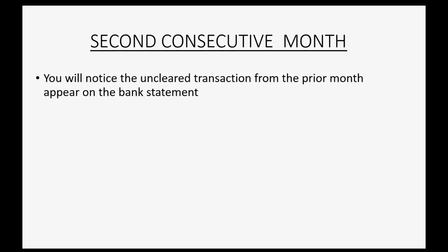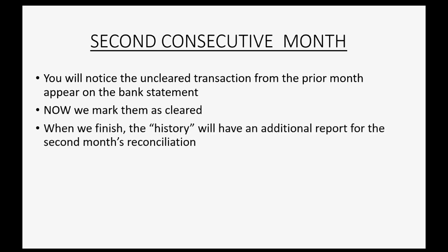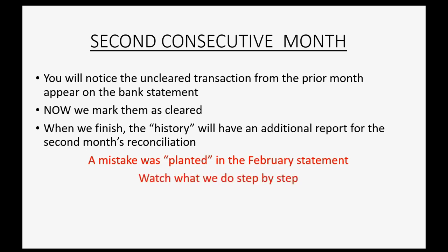First, you will notice the unclear transactions from the prior month appearing on this month's bank statement. We will mark them as cleared. When we finish, the history link in the top right will have an additional report for the second month's reconciliation. On top of that, I purposely planted a mistake in the February statement so that you can watch exactly what we do step by step when we find a mistake during bank reconciliation.